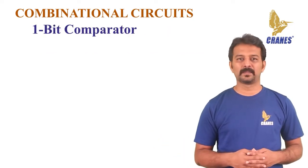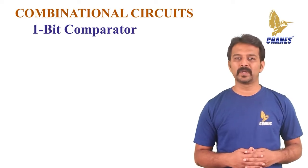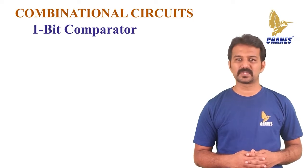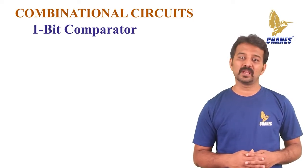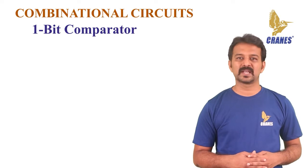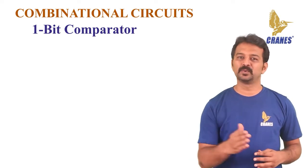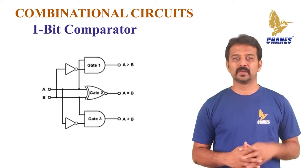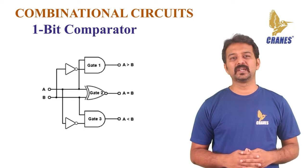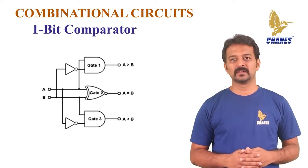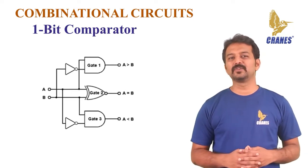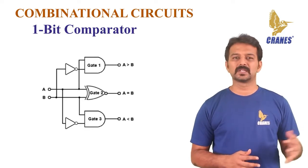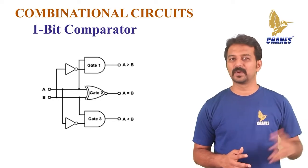Let's look at a one-bit comparator. A comparator used to compare two bits is called a single bit comparator. It consists of two inputs, each for the two single-bit numbers, and three outputs to generate less than, equal to, and greater than between the two binary numbers. A simple one-bit magnitude comparator is as shown. Gate one produces the function A greater than B and gate three gives A less than B. This basic circuit may be extended for any number of bits, but the more bits the circuit has to compare, the more complex the circuit becomes.